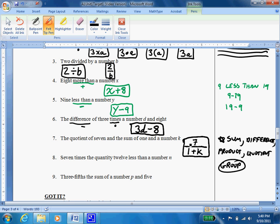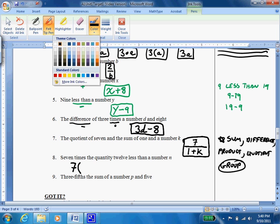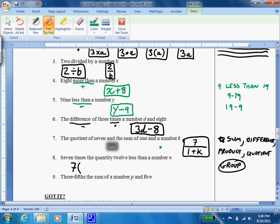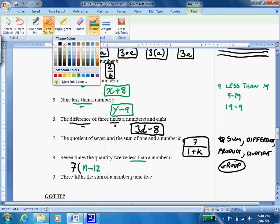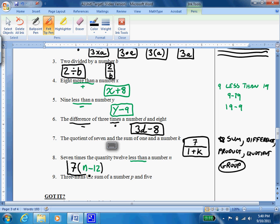Okay, the next one, 7 times the quantity, 12 less than a number n. So 7, I see quantity, and I see times, so I know I'm going to have to open a parentheses. And then I'll write this in green since that's what we've been doing all along. Here's that less than again that tells me it's subtraction and also tells me it's backwards. So I'm going to do n minus 12. So my final answer looks like that.